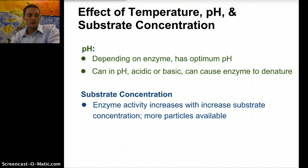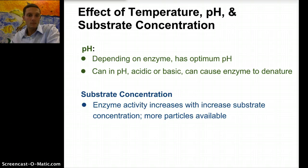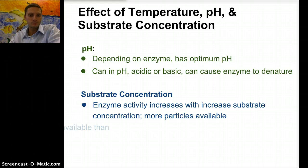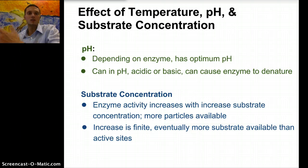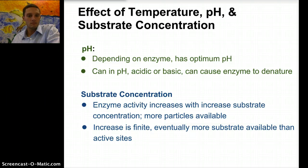The amount of substrate, or substrate concentration, can also influence enzyme activity. Enzyme activity increases with increased substrate — so the more substrate that's available, the more product that's going to be produced. However, the increase is finite. Eventually, at a specific point when there's too much substrate, there's not enough enzymes or active sites available, and it gets to a point where there's not enough enzymes to actually process all of that substrate.